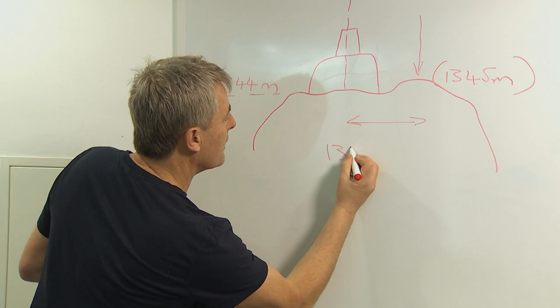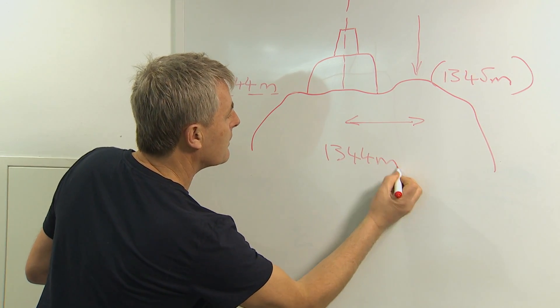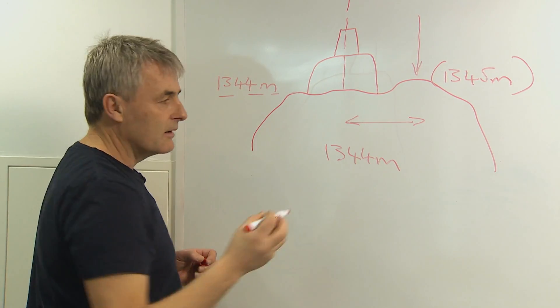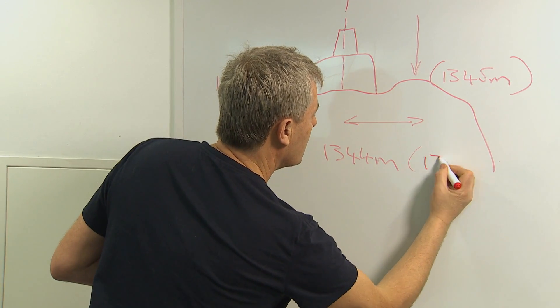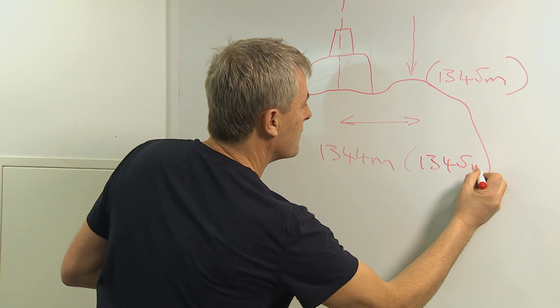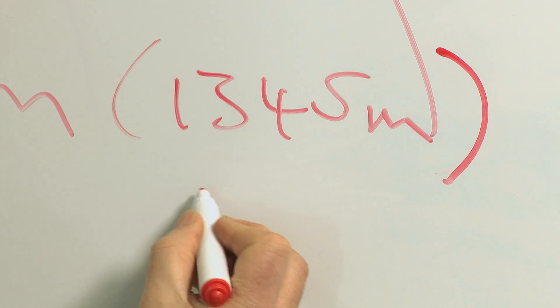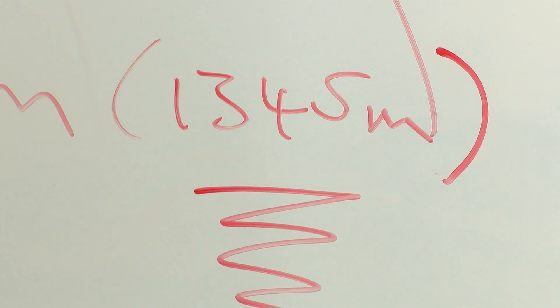So we have one three four four metres, which is the base of the cairn. One three four five metres, the natural high point of Ben Nevis. And that is the figure that counts.